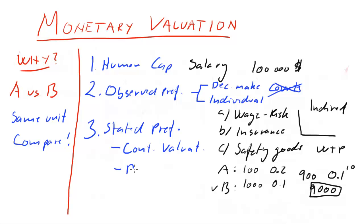Another option is called discrete choice experiments. In this approach, you give people lots of choices between option A and option B, describing each as a situation with different risk levels, income, and other attributes, and make people choose. By giving many different pairings and observing the choices they make, you can infer how much they value their lives. These were some methods for how you can actually put a monetary value on something that is seemingly impossible to value in money. In practice, you will get lots of different answers using these approaches, but this is the theory.